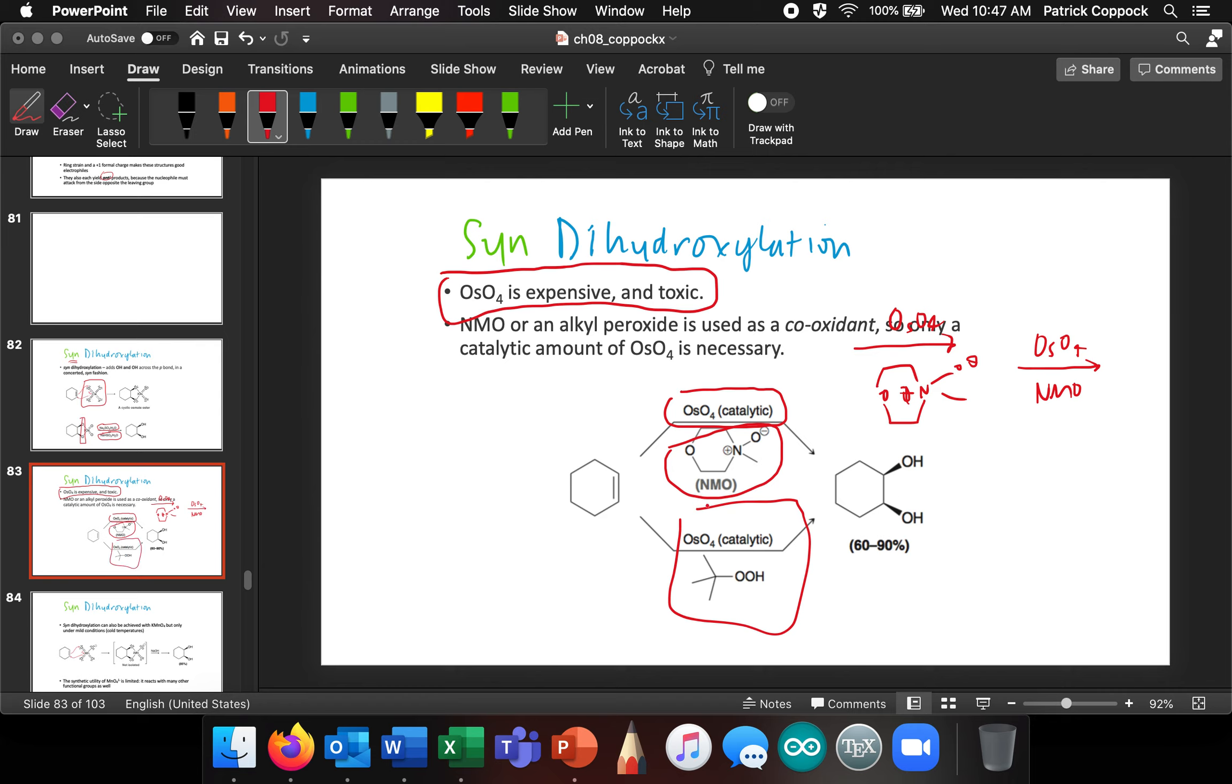Alternatively, we could use this peroxide. I don't even know the name of that. It's a tert-butyl, you can see that. But osmium tetroxide with this peroxide, both of those work pretty well to give syn dihydroxylation.